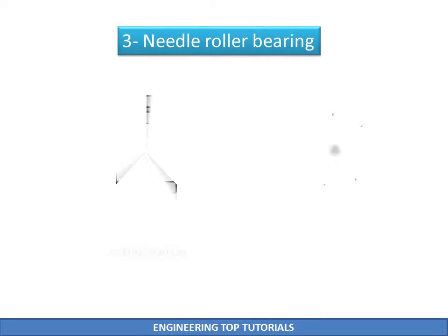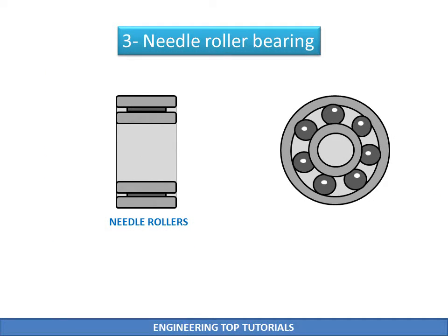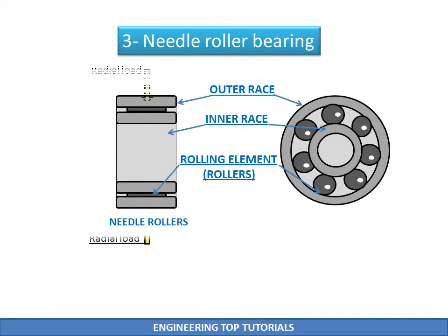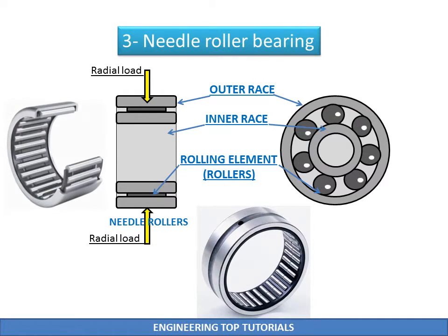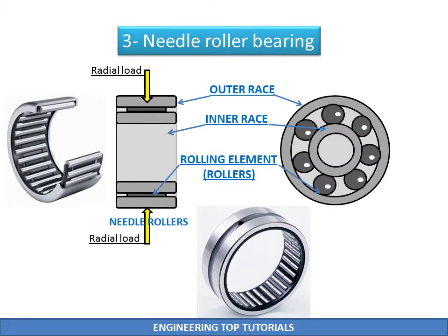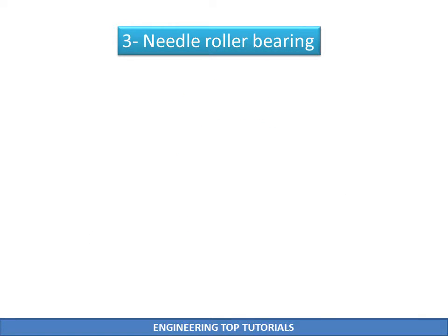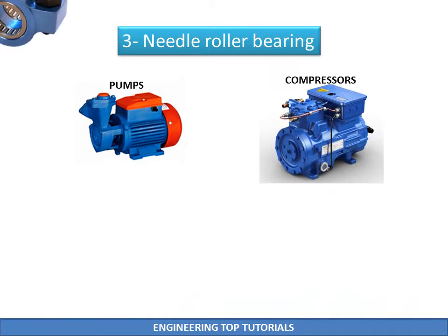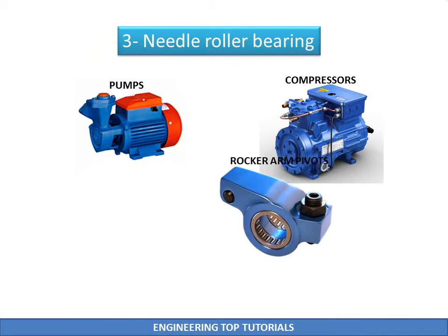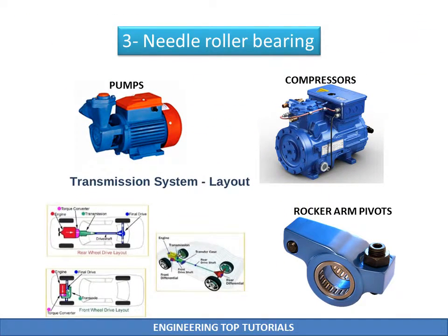Needle roller bearings are ideal for applications where high radial load carrying capacity is required but radial space is limited. Such bearings also suit applications where high rotational speed is involved but cannot accommodate axial load. Needle bearings are primarily used in engine components like pumps, compressors, rocker arm pivots, and transmission.